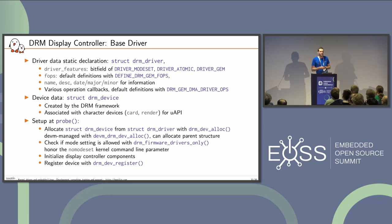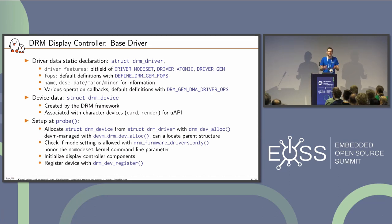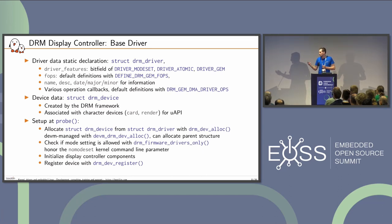One good practice is the DRM framework drivers-only check, which looks at the kernel command line for the 'nomodeset' parameter and skips registration if set. After allocating the device and registering individual pipeline components, we call drm_dev_register to expose the device to user space. From this point, user space can make IOCTLs to configure the display pipeline.